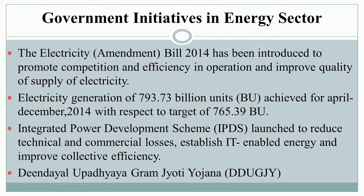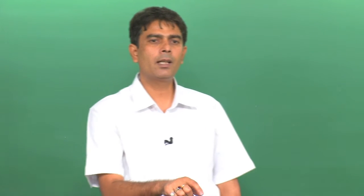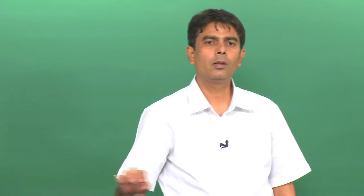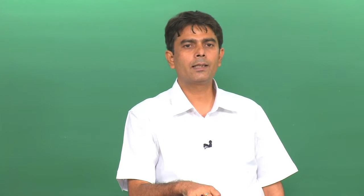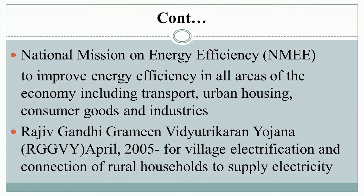In the energy sector, the Electricity Bill 2014 was introduced to promote competition and efficiency in operations and improve the quality of electricity supply. Electricity generation of 793.73 billion units was achieved for April to December 2014 against a target of 765.39 billion units. The Integrated Power Development Scheme was launched to reduce technical and commercial losses through IT-enabled energy systems. Deen Dayal Upadhyay Gram Jyoti Yojana was also launched. The National Mission on Energy Efficiency aims to improve energy efficiency across transport, urban housing, consumer goods, and industries. The Rajiv Gandhi Grameen Vidyutikaran Yojana, launched in April 2005, focused on village electrification and connecting rural households to electricity supply.